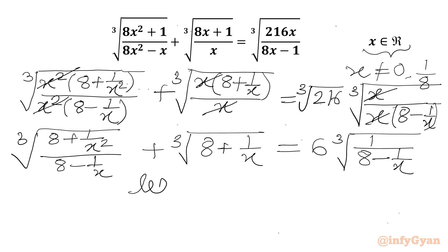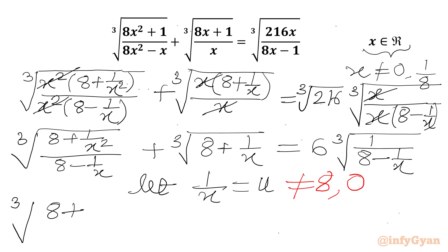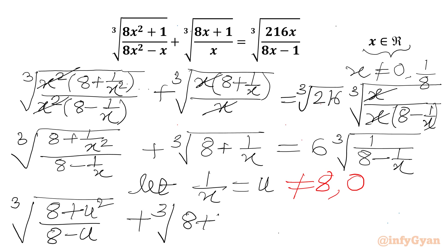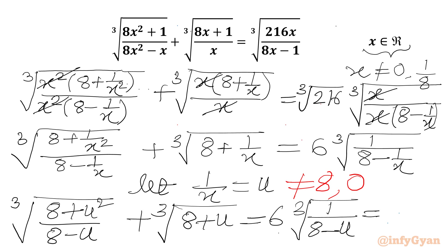Let us use substitution now. Let 1 over x equal to u. If x is not equal to 1 over 8, then u cannot be 8. And to find u or x, we cannot consider u equal to 0 also. So our equation becomes: cube root of (8 plus u²) over (8 minus u), plus cube root of (8 plus u), equal to 6 over cube root of (8 minus u).